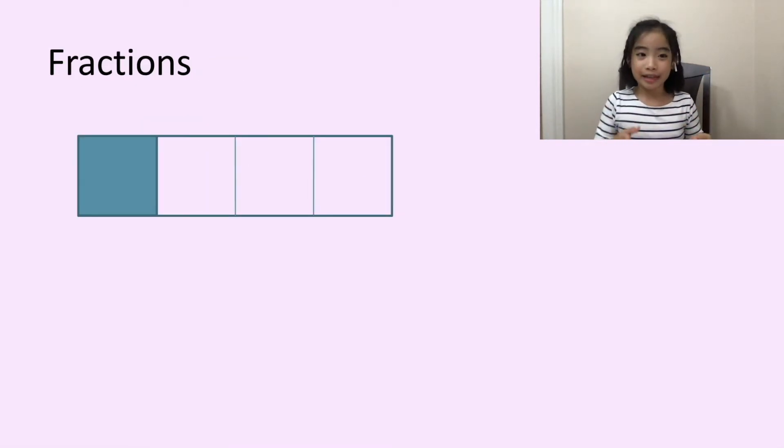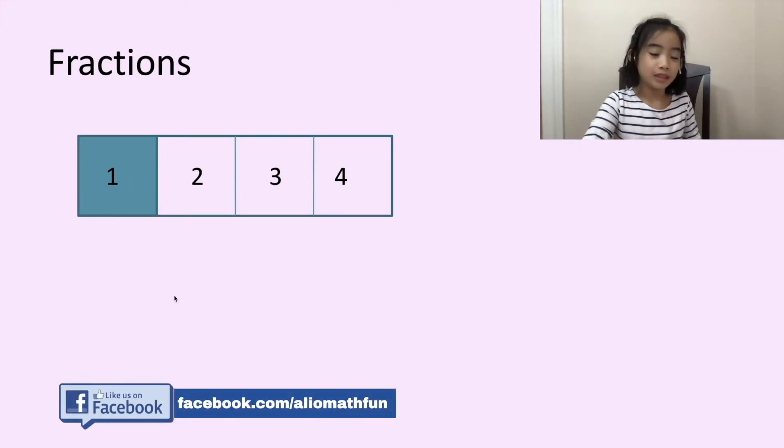Now, let's look at fractions. Here is a rectangle. It is divided into one, two, three, four. Four equal pieces. One of the pieces are shaded in green. So, let's write this as a fraction. First, we write a division line. Do you know why we write a division line? Well, fractions are divisions. We'll talk about this more in the future.